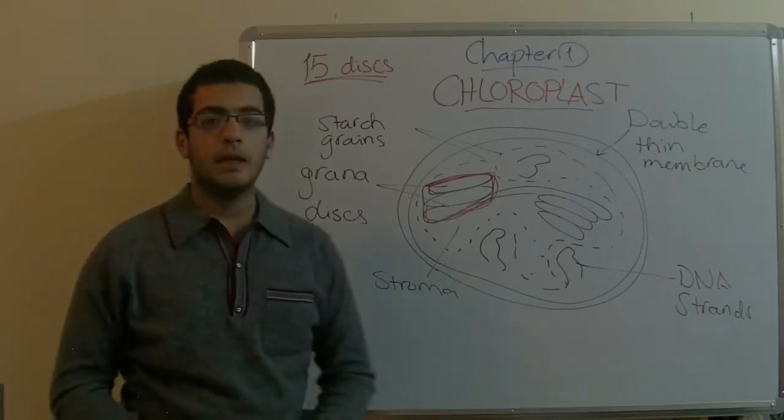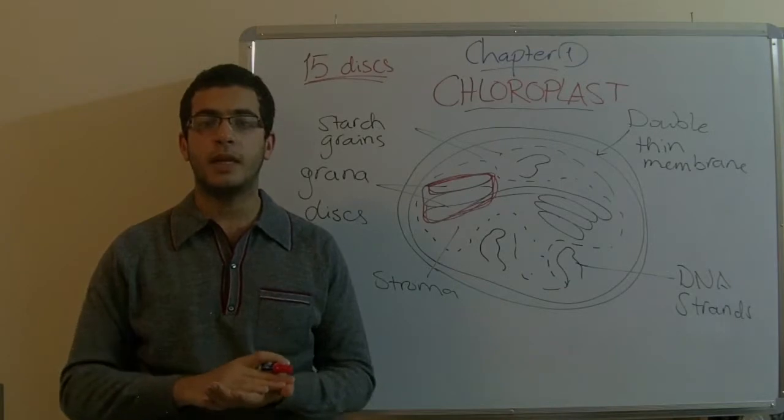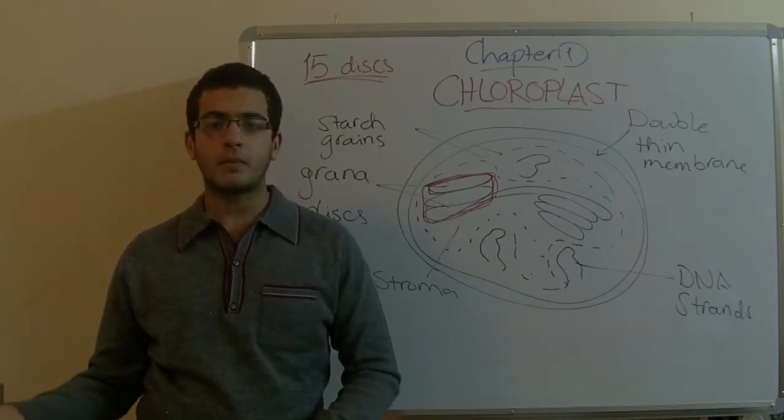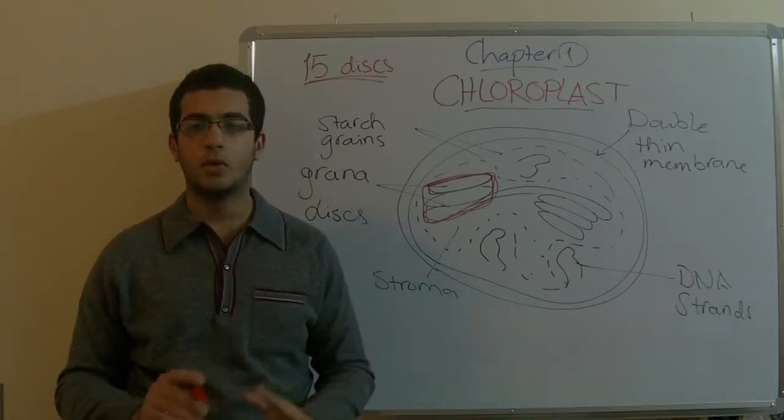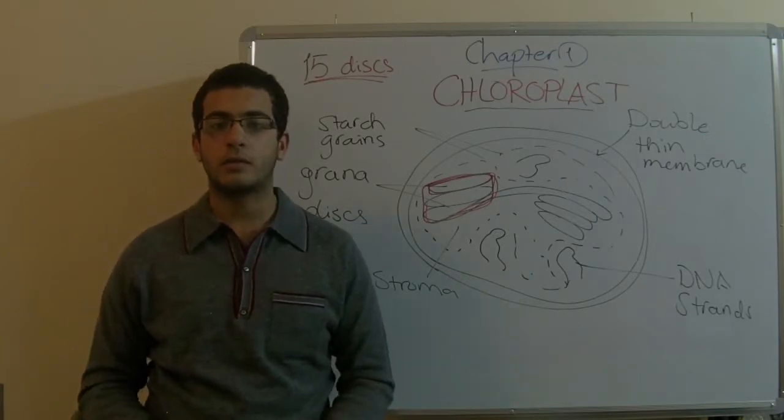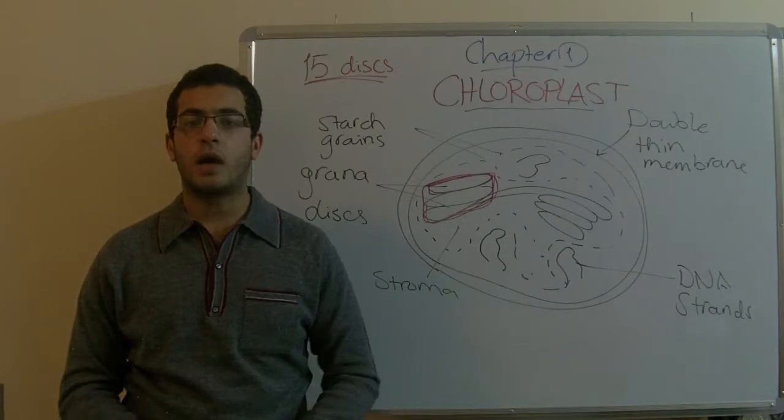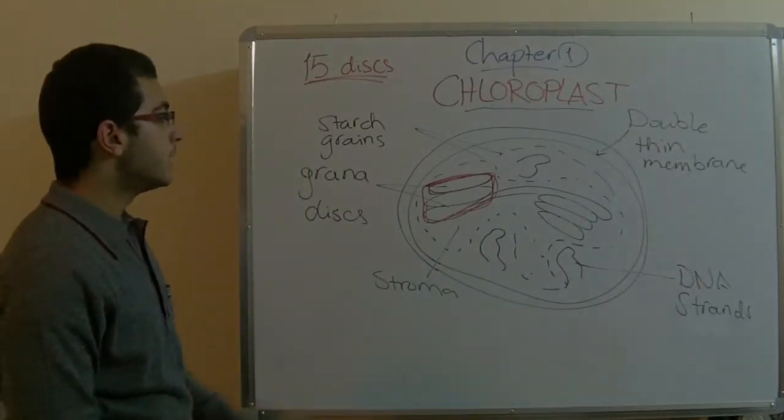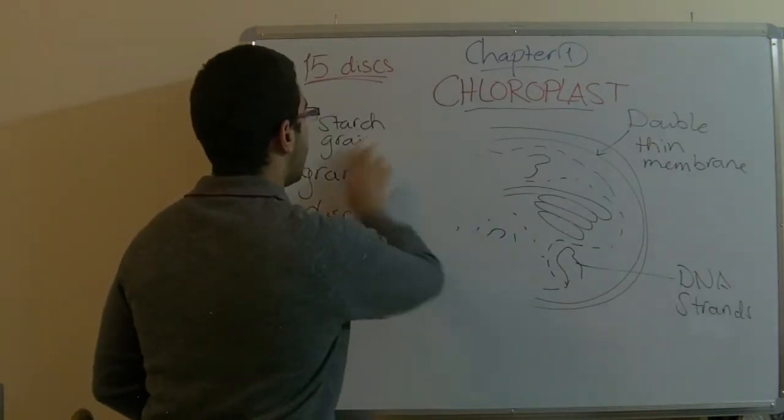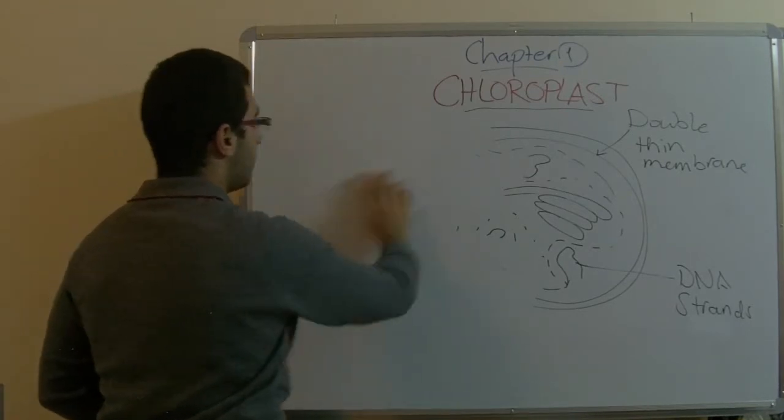We have the external membrane of the granum so that it extends from it to meet the external membrane of another granum, to increase the surface area which is exposed to light. Such a structure increases a lot the surface area of light absorption. All right, this is our part. We will talk about something else also about the grana.